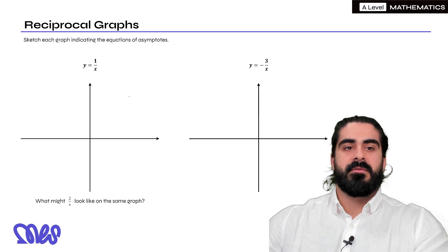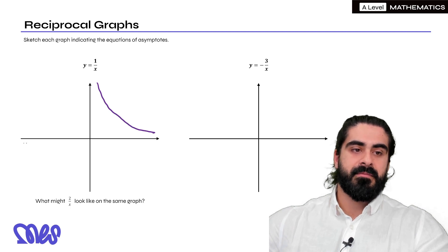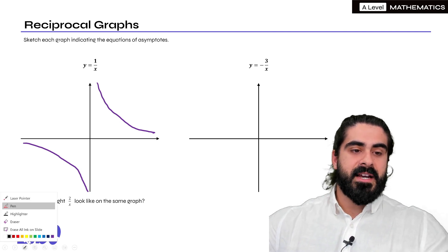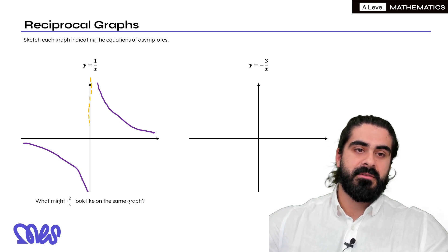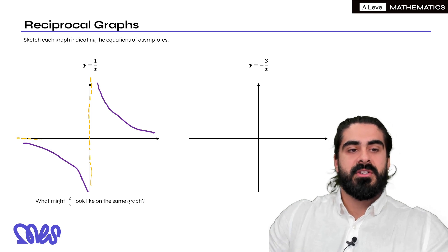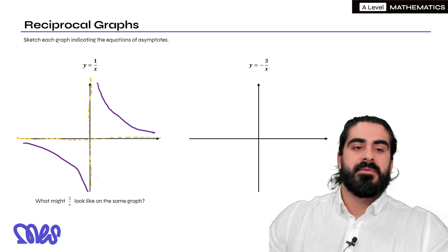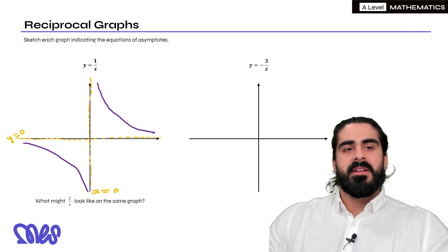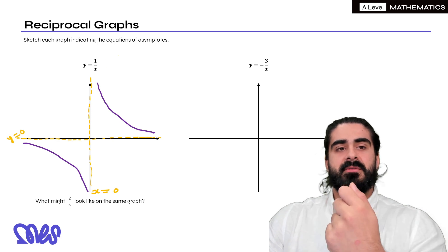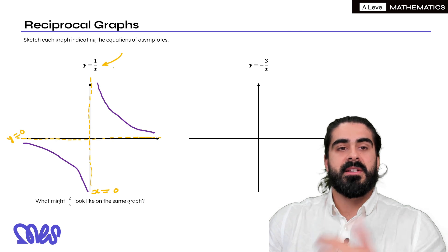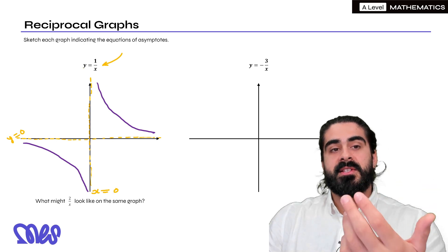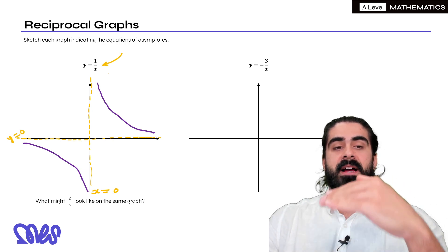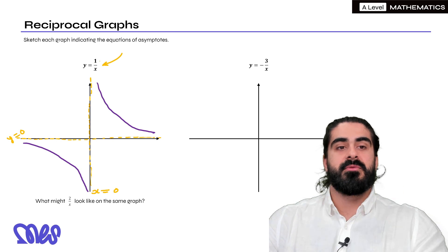The final ones are reciprocal graphs. We know what reciprocal graphs look like from GCSE — they don't touch the axes but they go towards the axes. The axes are known as asymptotes. The y-axis is an asymptote, meaning the graph goes towards the y-axis but never actually touches it, and the x-axis is also an asymptote. The y-axis is x equals 0 and the x-axis is y equals 0. The reason the y-axis is an asymptote is because if x is 0 you would have 1 divided by 0, which doesn't make sense. Similarly, if you sub in y equals 0 and times through by x you get 0 equals 1, which doesn't make sense. Asymptotes are basically values of x and y which are undefined.